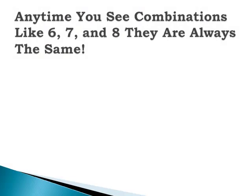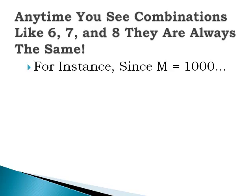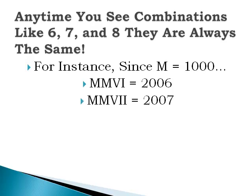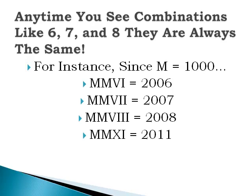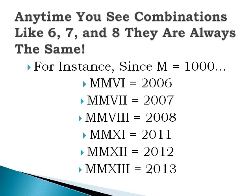Any time you see combinations like VI, VII, or VIII, they're always the same. A VI at the end of a long Roman numeral means that number ends in 6. Since M equals 1000, MM equals 2000. So MMVI equals 2006, MMVII equals 2007, MMVIII equals 2008, MMXI equals 2011, MMXII equals 2012, and MMXIII equals 2013. These are numbers we've already learned, now with two M's in front for 2000.